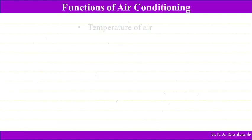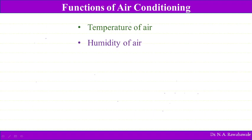So what is the function of air conditioning? Air conditioning is the system which maintains four things of air in a room or space to be air conditioned. The very first parameter the air conditioning system maintains is temperature of air, as per the requirement. The second thing is humidity of air, depending on the requirement or the purpose for which air conditioning is used.